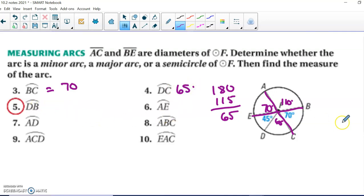We're looking for BD. Start at B, or D. Stop when you get to B. So it's this piece right here. We're going to add those together, 135.